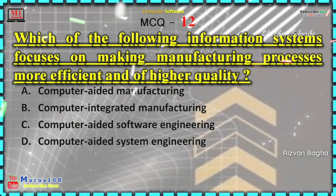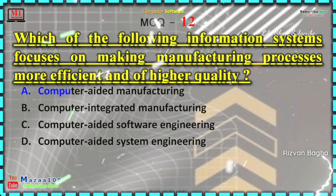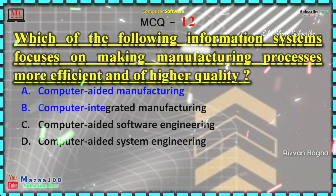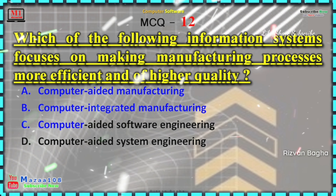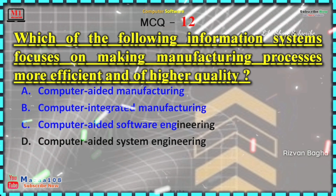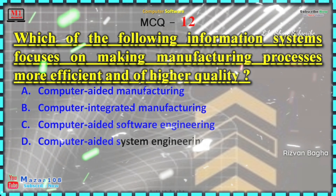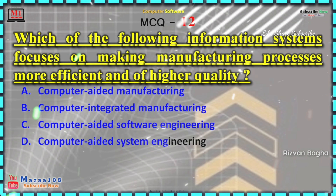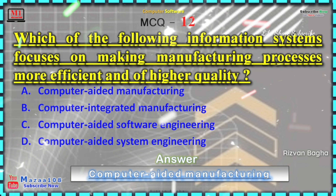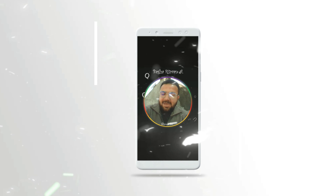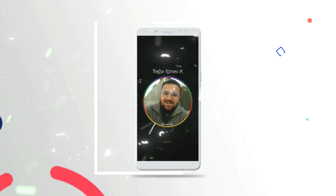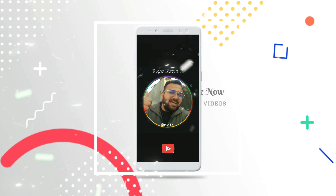The options are: Option A, Computer Aided Manufacturing; Option B, Computer Integrated Manufacturing; Option C, Computer Aided Software Engineering; and Option D, Computer Aided System Engineering. The correct answer is Option A, Computer Aided Manufacturing.